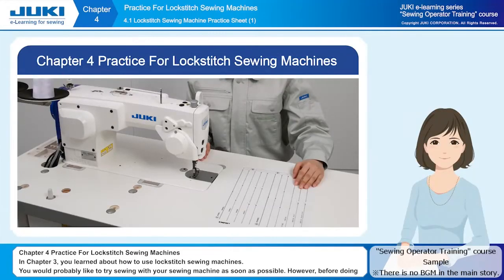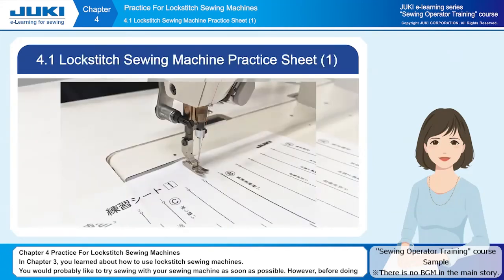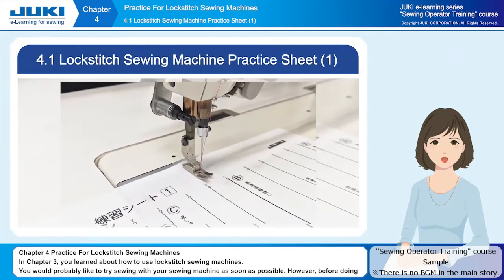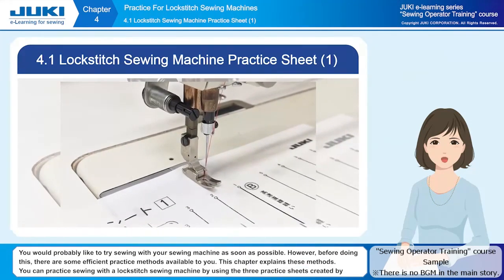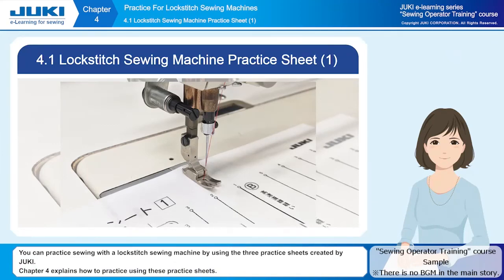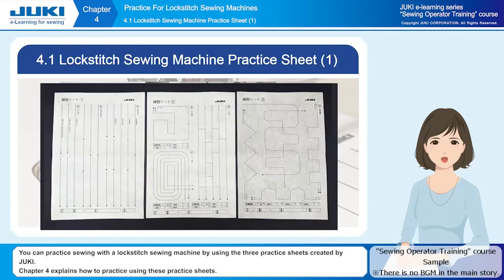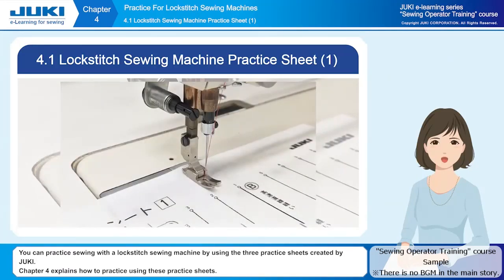Chapter four: practice for lock stitch sewing machines. In chapter three you learned about how to use lock stitch sewing machines. You would probably like to try sewing with your sewing machine as soon as possible. However, before doing this, there are some efficient practice methods available to you. You can practice sewing with a lock stitch sewing machine by using the three practice sheets created by Juki. Chapter four explains how to practice using these practice sheets.